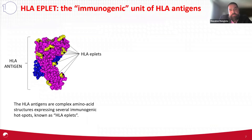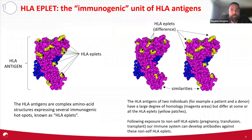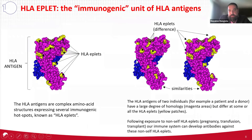For the most part, everybody calls these hot spots HLA eplets. When you compare two molecules — for example, that of a patient and a donor — you see that between the two molecules there are a lot of similarities, represented by the magenta color. But then there are differences in these hot spots, these yellow areas in the two structures. Those yellow patches are the HLA eplets.